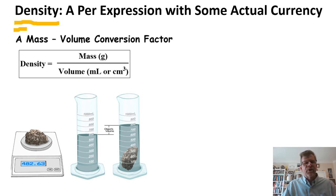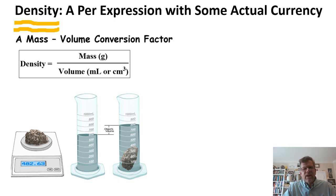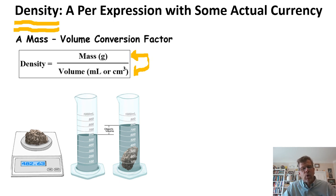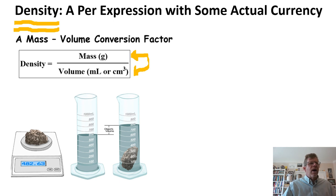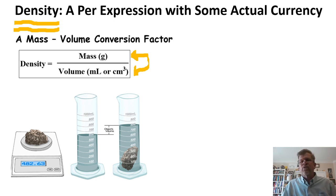Density is a physical property of a pure substance, which is essentially a doorway between mass and volume — the mass of a sample and the volume of a sample. Typically, the per expressions we've used before are conversions between the same type of measurement: two different lengths, or two different masses, or two different values of volume. Here, we're actually going between types of measurements — in this case, mass and volume.